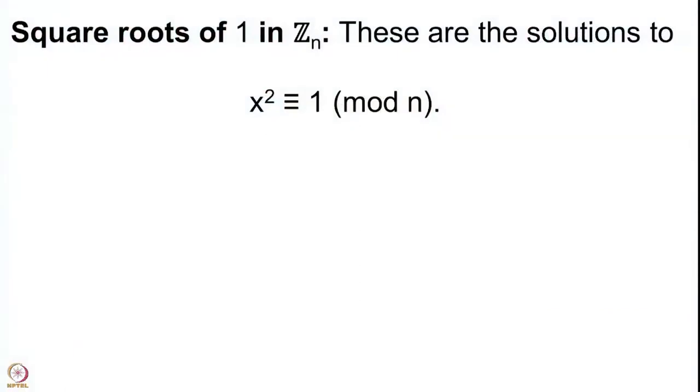We saw exactly when Ax ≡ B (mod n) has solutions. We go one step further and try to solve quadratic congruences. The very beginning step is to solve x² ≡ 1 (mod n). This is the nonlinear quadratic congruence that we are going to solve.